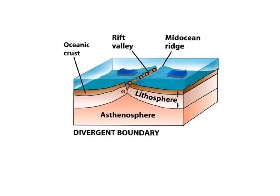For a divergent boundary, the plates are going in opposite directions — they're dividing. When that happens, magma from the asthenosphere rises and cools to form a mid-ocean ridge or a rift valley. A mid-ocean ridge is simply an underwater mountain chain, whereas a rift valley is a valley formed from the plates moving apart.